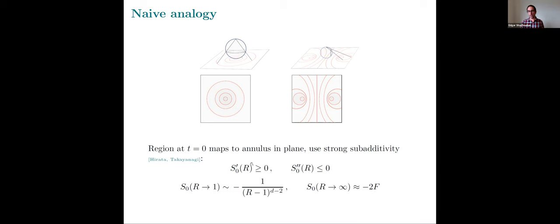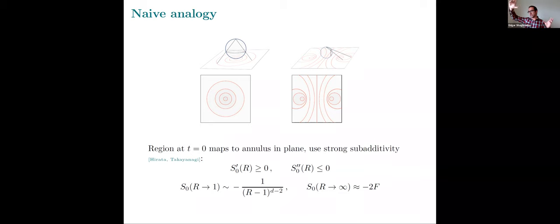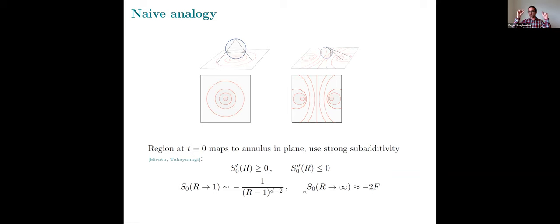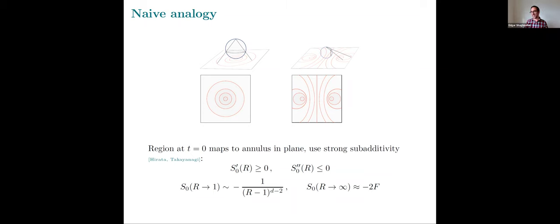There are nice constraints we know about those entropies. We can't compute them exactly for general theories, but strong subadditivity gives us derivative constraints. S₀ here denotes the finite piece of the entropy — ignoring UV divergent terms. R here is the ratio of the two radii of the spheres. When R is large, the annular region is very thick and the computation factorizes into the entropy of two independent spheres, giving minus 2F. When the two spheres come close together, it behaves like a parallel plate capacitor in the thin annular limit and diverges. So we have good control over the first derivative of the matter entropy: it starts off at infinity for a very thin annular region, and as you increase R it monotonically decreases to zero.